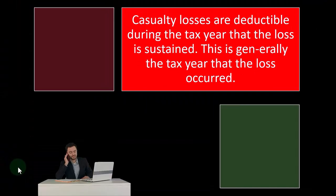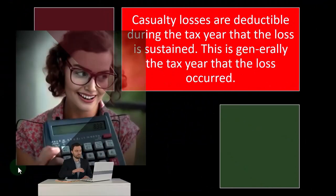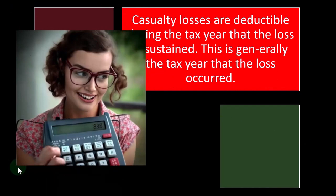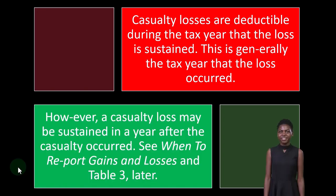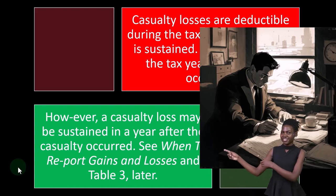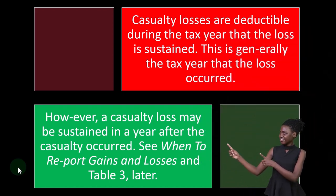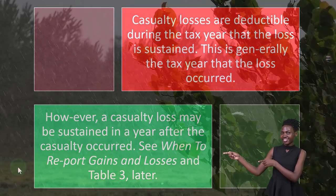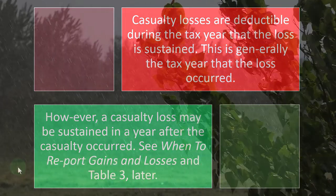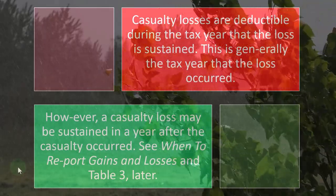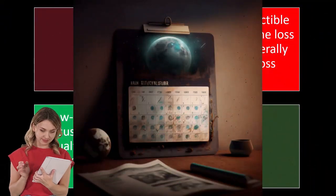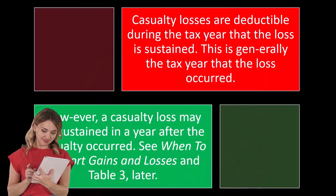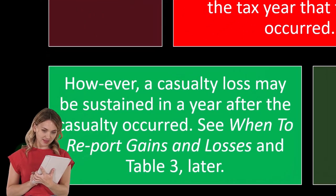Casualty losses are deductible during the tax year that the loss is sustained — generally the tax year the loss occurred. You would normally think you get the deduction when the casualty happened. We may see some exceptions with federally declared disasters, where there may be capacity to take the loss across two years, but the normal rule is that you take the loss in the year it occurred. However, a casualty loss may be sustained in a year after the casualty occurred — see 'When to Report Gains and Losses' and Table 3 later.